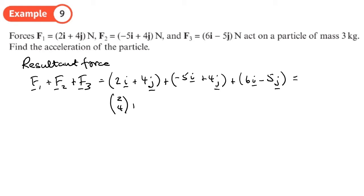And then I want to find what all of that is. Now if I've written these as vectors you'll see it's just a little bit easier: 2, 4 plus negative 5, 4 plus 6, minus 5—see how much easier that is. Either way I'll get the same answer. So 2 minus 5 is minus 3 plus 6 is going to be 3, so 3i. And 4 plus 4 is 8 minus 5 is going to be plus 3.